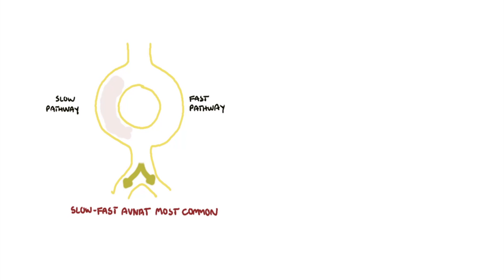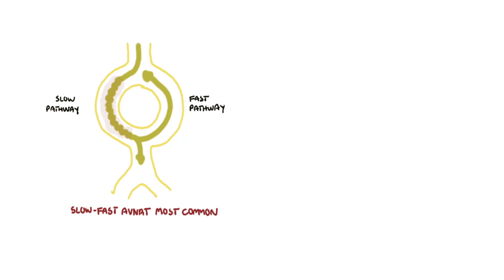The next impulse from the sinoatrial node will enter the slow pathway first because the refractory period here is fast and the cells are able to get excited again. The impulse traveling down the slow pathway may eventually re-excite fibers along the fast pathway and the bundle of His. The impulse will travel rapidly backwards along the fast pathway — retrograde — to the atrium, and also re-enter the slow pathway again, causing a re-entry circuit that continues, resulting in simultaneous ventricular and atrial contractions.